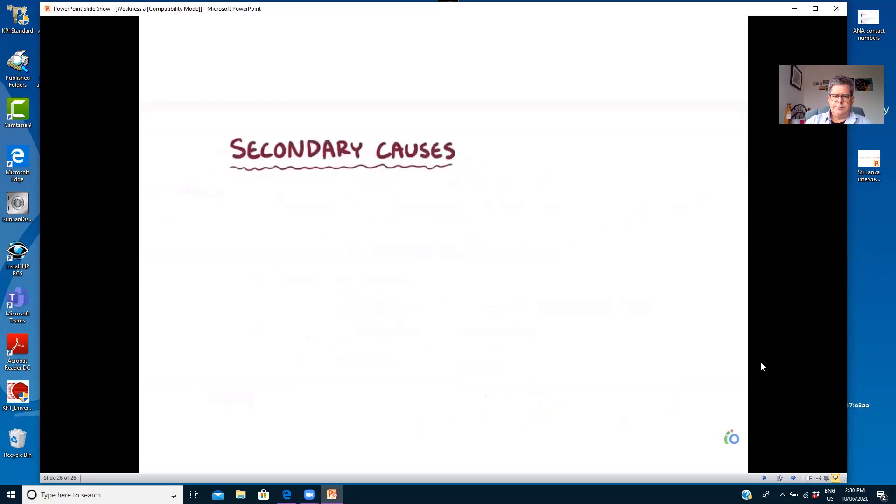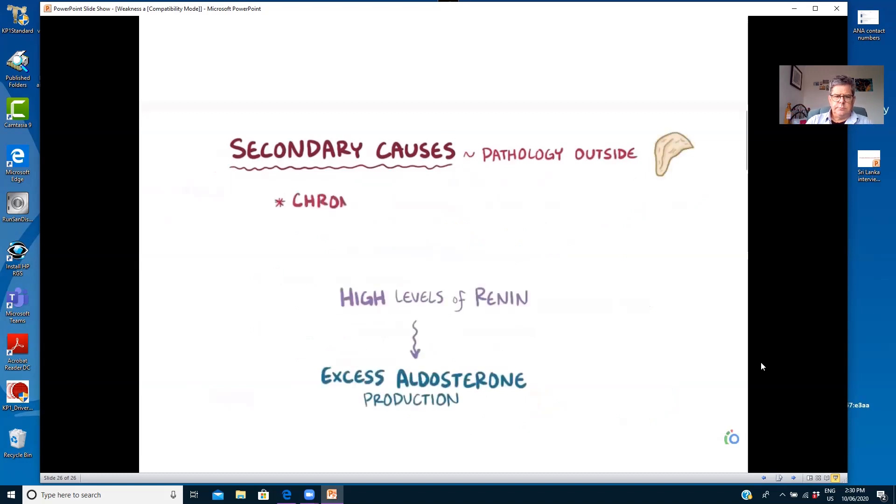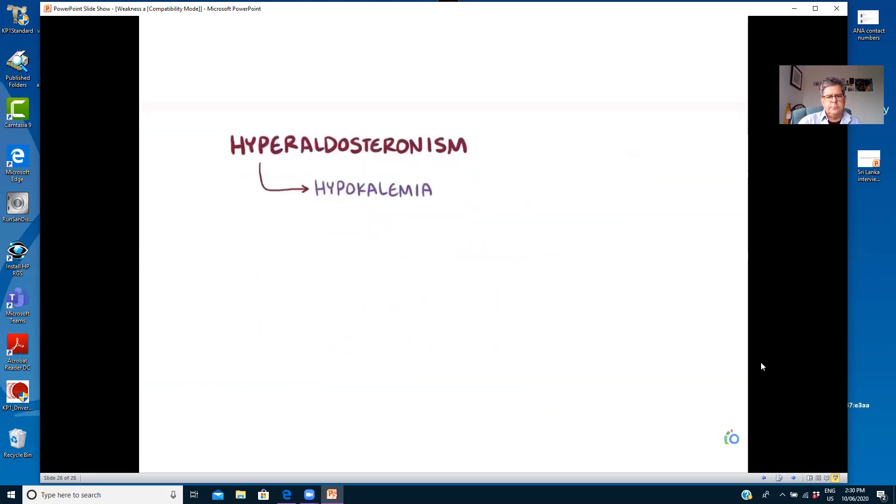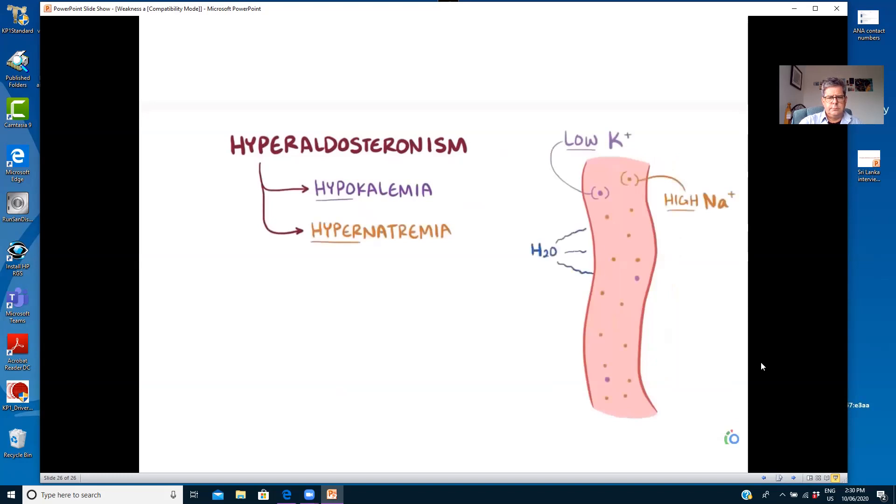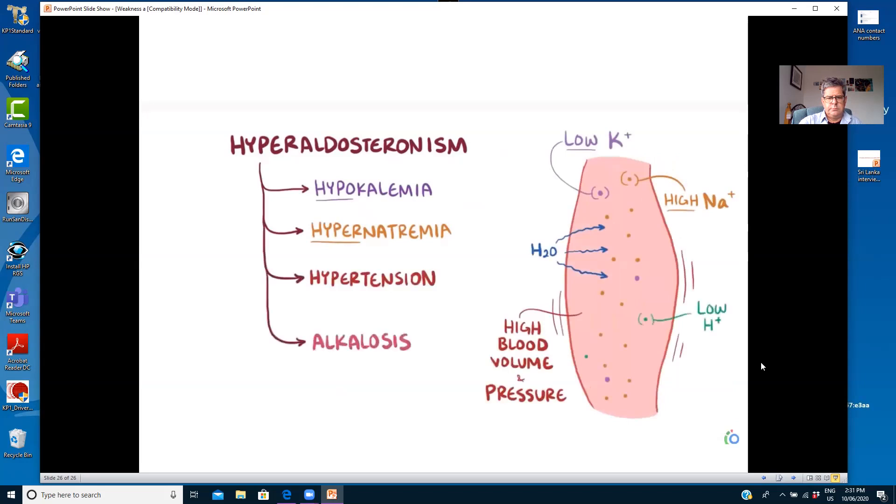Hyperaldosteronism can also be due to secondary causes, where the pathology lies outside the adrenal gland. Secondary causes of hyperaldosteronism are usually due to excess aldosterone production in response to high levels of renin. This might happen when there's a chronic decrease in blood pressure, like in congestive heart failure or cirrhosis. Hyperaldosteronism leads to hypokalemia, which is low potassium levels in the blood, as well as hypernatremia, high sodium levels in the blood. With more sodium around in the blood, water moves into the blood vessels, which results in a high blood volume and high blood pressure, or hypertension. Finally, the loss of protons also results in an alkalosis, and more specifically a metabolic alkalosis, since it's caused by the kidneys.